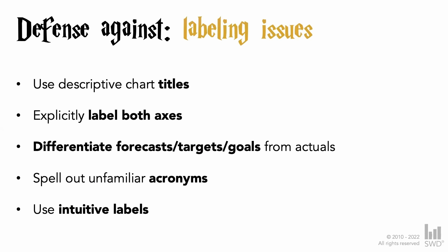So: chart titles — make sure we explicitly label both axes, differentiate forecast, targets, and goals from actuals, spell out unfamiliar acronyms, and use intuitive labels.